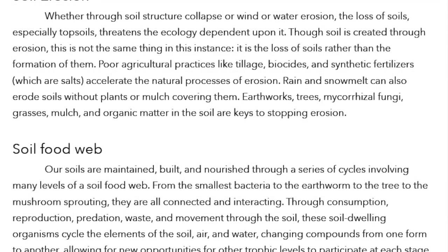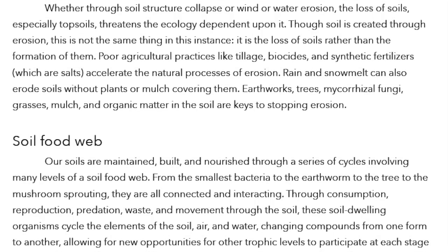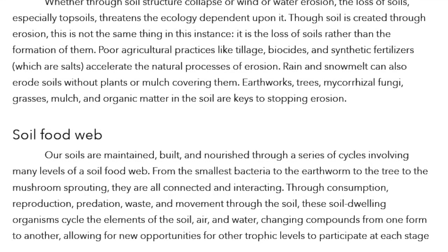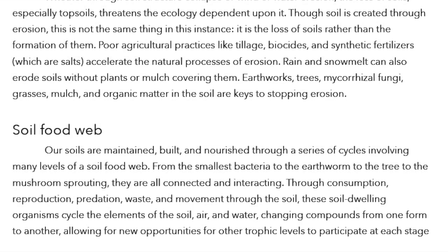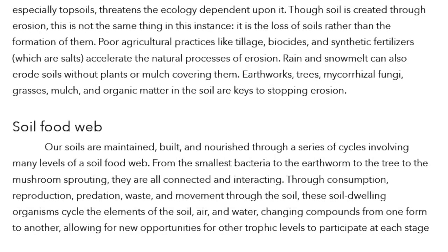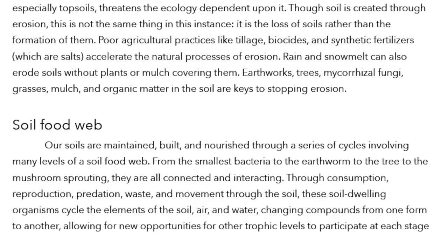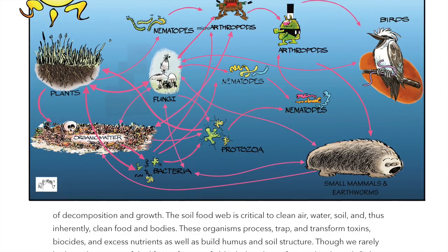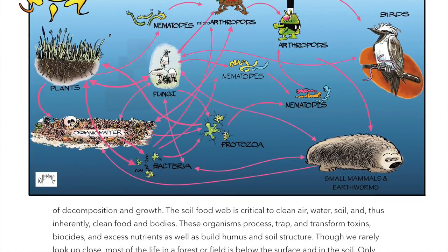Soil Food Web. Our soils are maintained, built, and nourished through a series of cycles involving many levels of a soil food web. From the smallest bacteria to the earthworm to the tree to the mushrooms sprouting, they are all connected and interacting. Through consumption, reproduction, predation, waste, and movement through the soil, these soil-dwelling organisms cycle the elements of the soil, air, and water, changing compounds from one form to another. The soil food web is critical to clean air, water, soil, and thus, inherently, clean food and bodies.